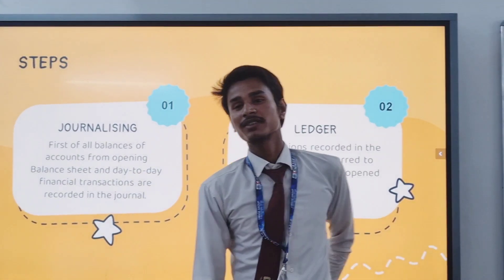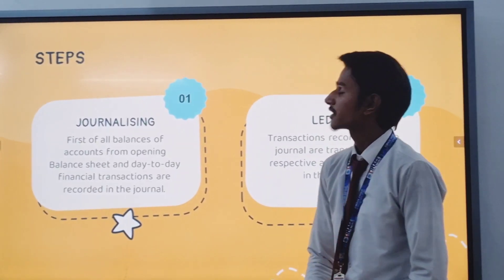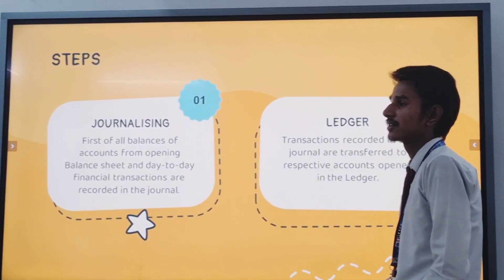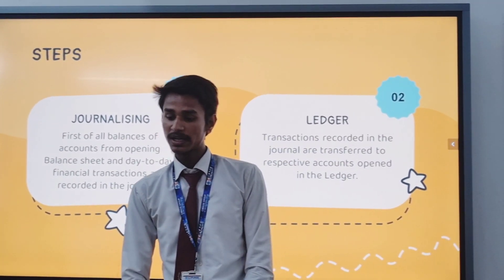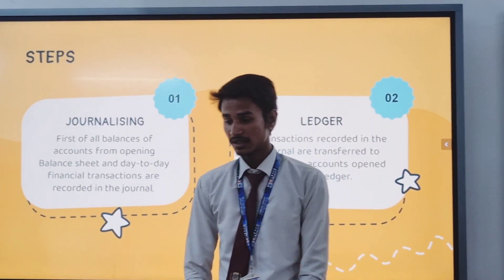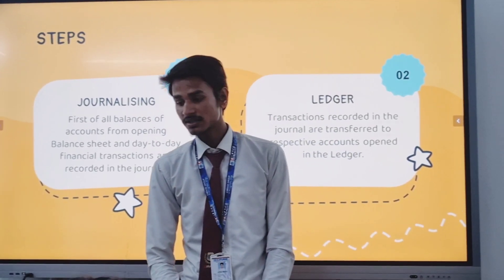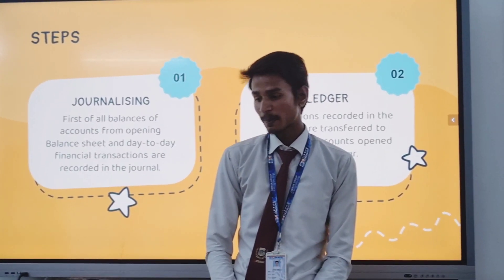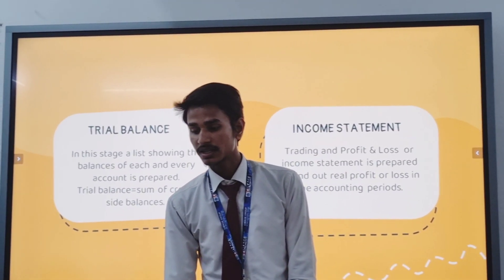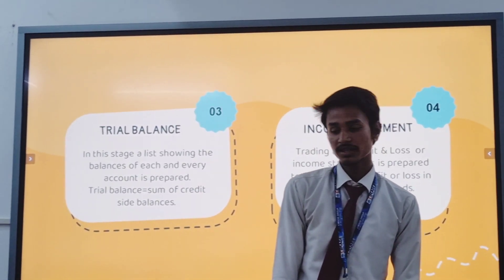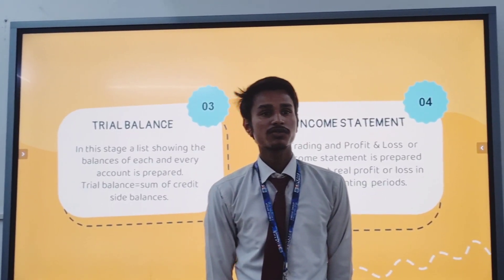Good morning everyone. My name is Karan Kumar, a student of BCA 5th Semester. I am going to cover the steps of accounting. First step: balances of accounts from the opening balance sheet and day-to-day financial transactions are recorded in the journal. The second step is the ledger — transactions recorded in the journal are transferred to respective accounts in the ledger. The third step is the trial balance — a list showing the balance of each account is prepared, and the trial balance equals the sum of the credit side.